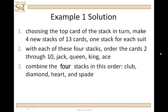Until we're done with all 52 cards and we've created four stacks of 13 cards each. Then with each of these four stacks, we're going to order them two through ten, jack, queen, king, ace. Then step three, we'll combine the four stacks in this order: clubs, diamonds, hearts, and spades. That's it.